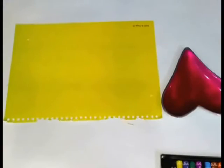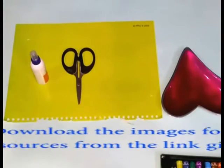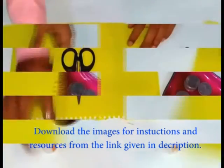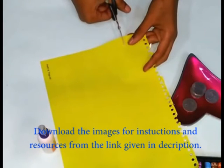Things required are green paper, glue, and some coins. Take the green paper and cut a square piece from it.